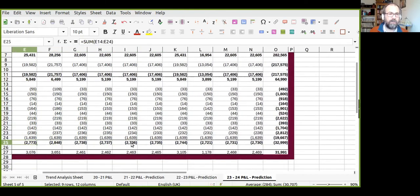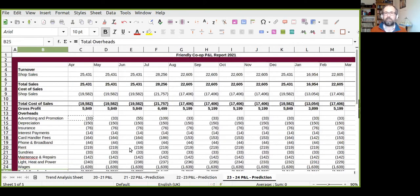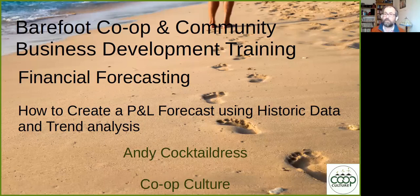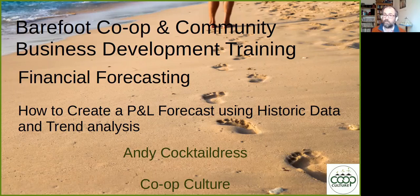We now have a set of three years' P&L forecasts by month, based on predicted trends using historic data and applying trend analysis. So that was this video on how to create a P&L forecast using historic data and trend analysis. I hope you found it informative. If you did like the video please click the like button. If you have any comments or have any future videos you'd like to see us create, please leave them in the comments section below. If you wish to be notified when we upload more short instructional videos for co-ops, community businesses and their development workers, please subscribe to the channel and hit the notification bell. Thank you all for watching and I'll see you in the next video.